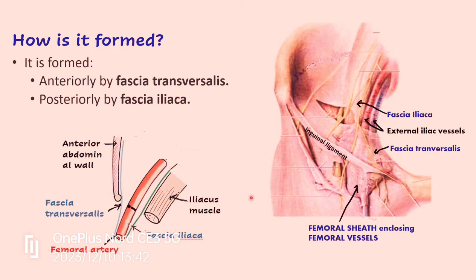Here is a sagittal section diagram. We can see the anterior abdominal wall — the deepest muscle layer is the transversus abdominis, and still deeper we have the fascia transversalis. When the vessels pass from the pelvis to the thigh, this fascia extends downward, anterior to the femoral vessels, forming the anterior aspect of the femoral sheath. The fascia iliaca covering the iliacus muscle is prolonged as the external iliac vessels reach the thigh to form the posterior part of the femoral sheath.